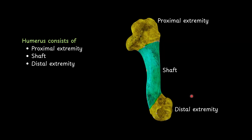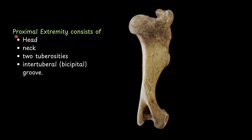Humerus consists of proximal extremity, shaft, and distal extremity. The proximal extremity consists of one head, neck, two tuberosities, and an intertubercular groove — also called the bicipital groove.